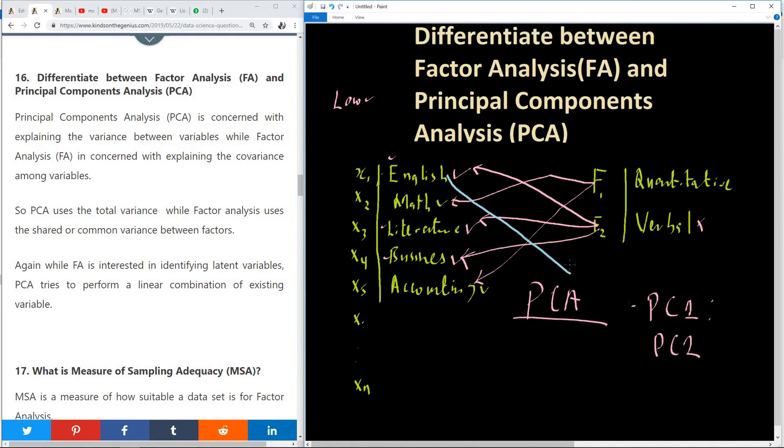So in this case, we are relating English to PC1, relating maths to PC1, literature to PC1, everything relates to PC1, and the same thing for PC2. So in this case, we are using total variance.